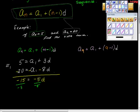Divide both sides by negative 5. We get d equals 3. So d equals 3. That's one piece of information.